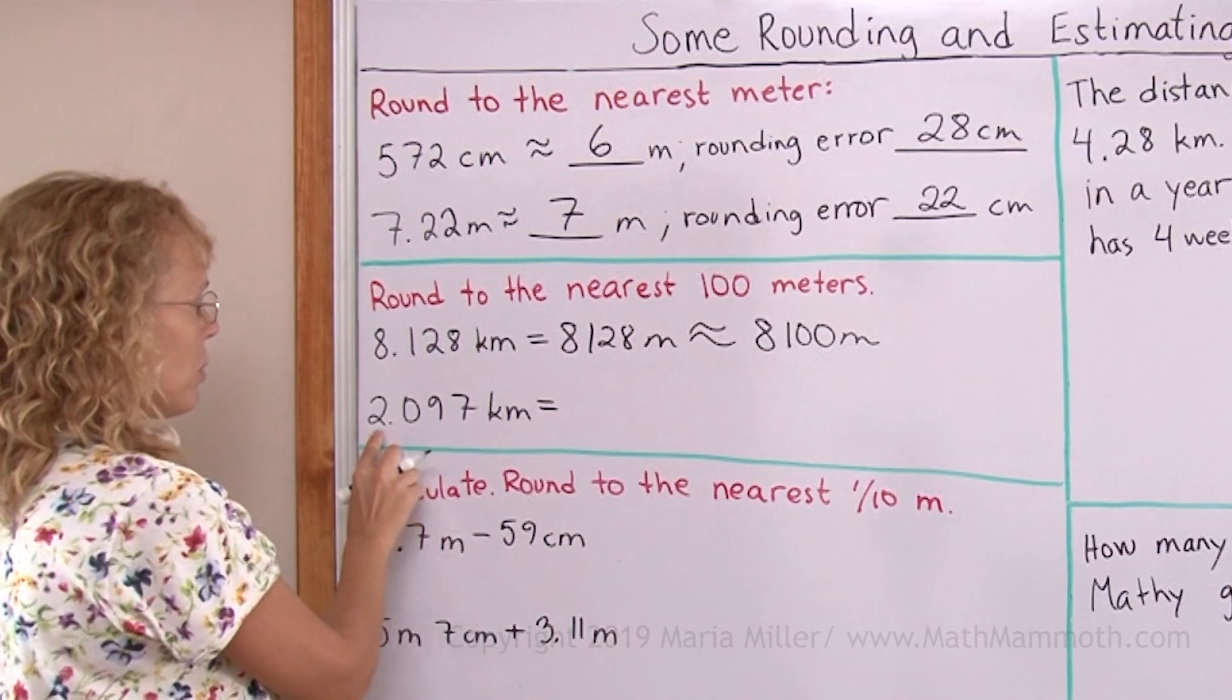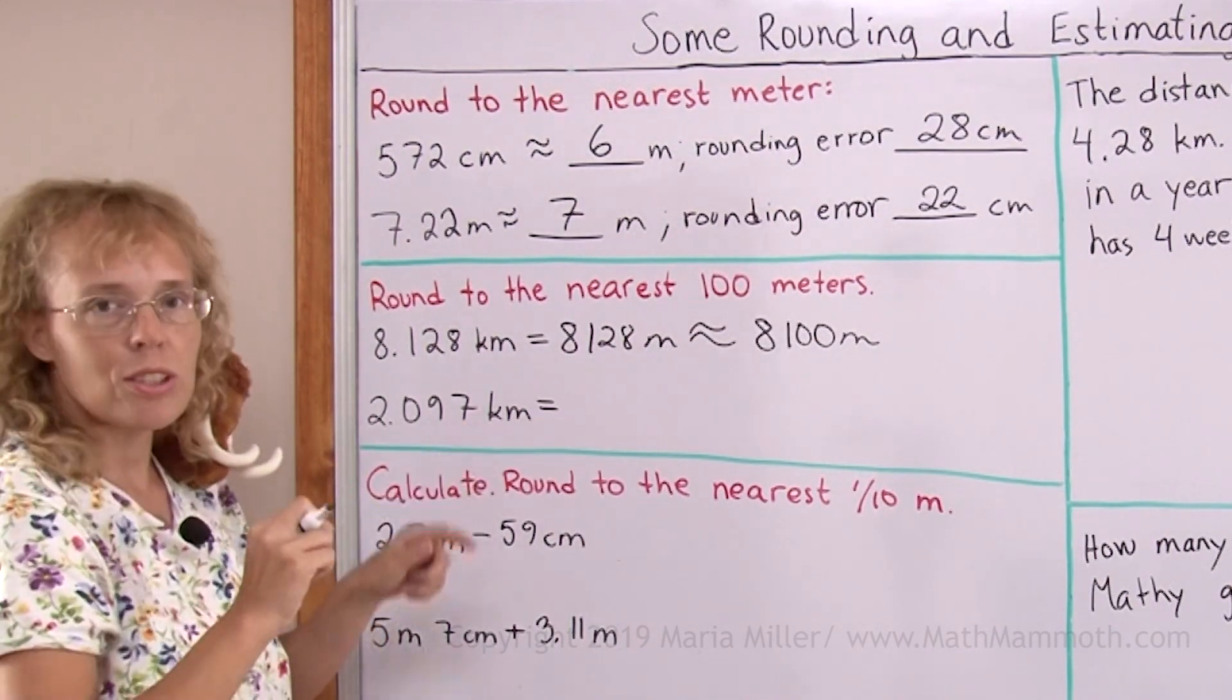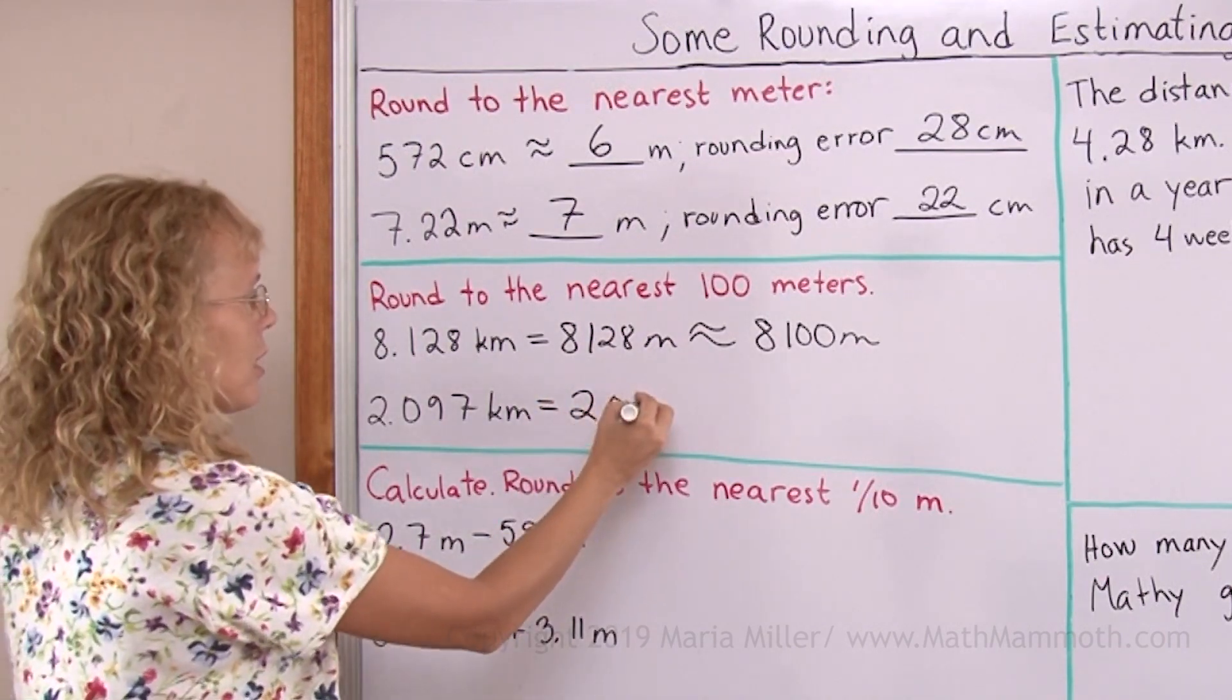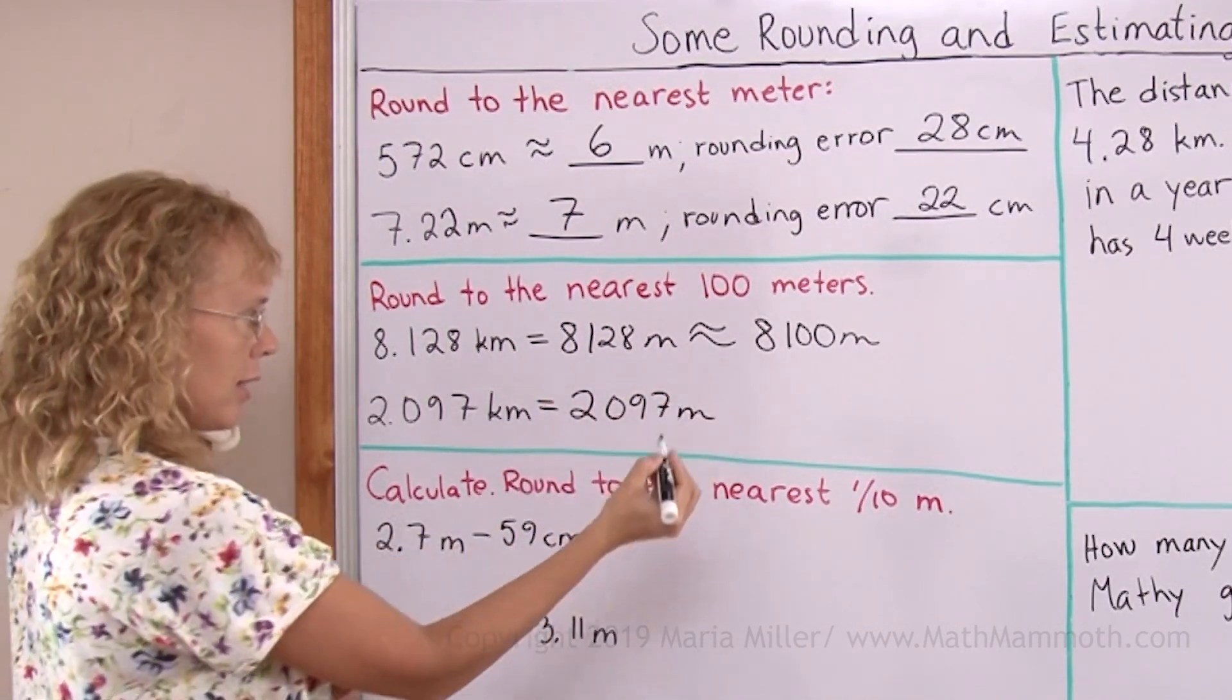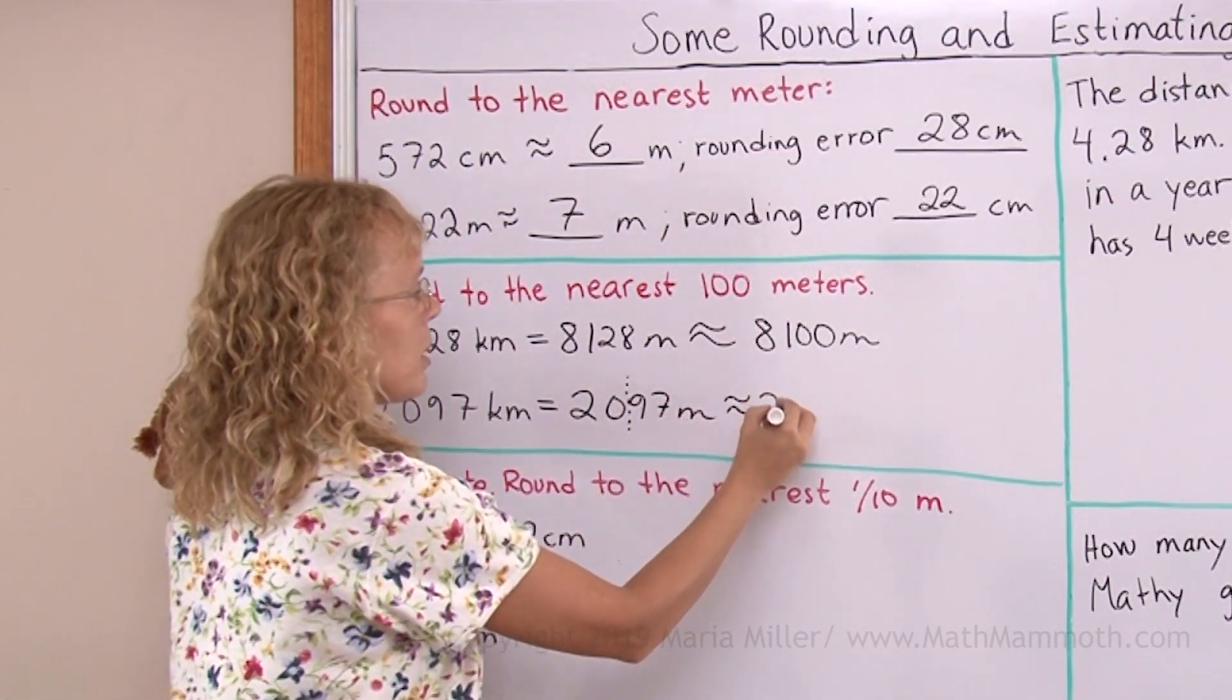Let's do the same here. Change this to meters first. Remembering that two whole kilometers would make 2,000. So 2 goes to the thousands place and then these other digits follow. Like that. And then rounding it here, we get 2,100 meters.